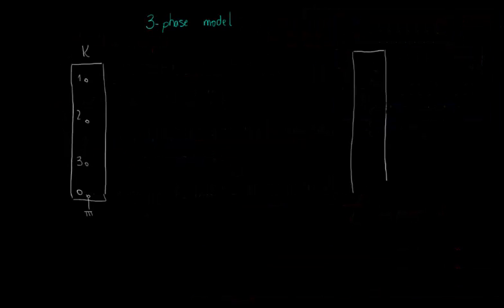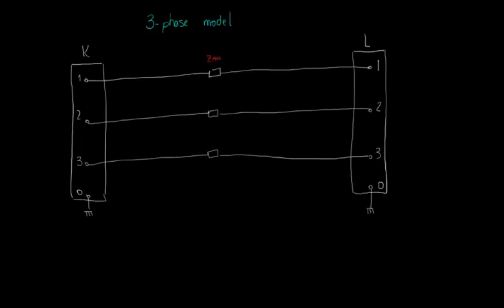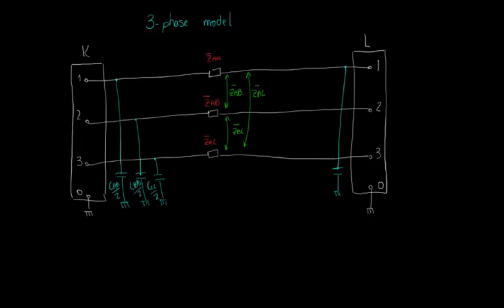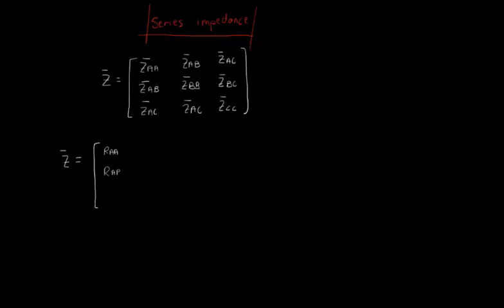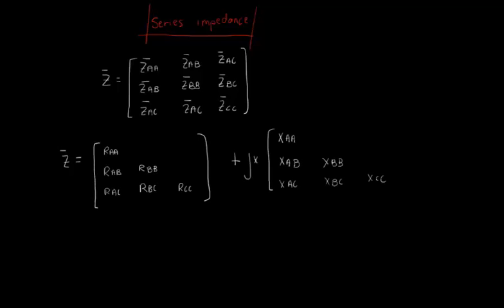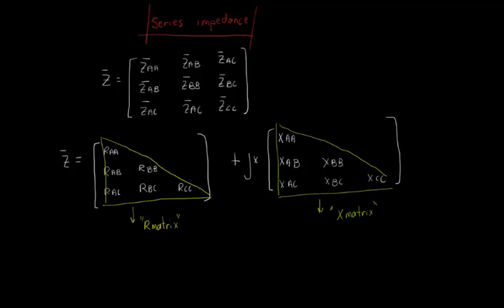Now let's consider a three-phase line without neutral. In this case, we have essentially the same matrices, but since there are three nodes in each bus, the Z matrix will be a 3x3 matrix, which can be broken into R matrix and X matrix, and defined in OpenDSS with the lower triangle as well. The same applies to the shunt admittance matrix.